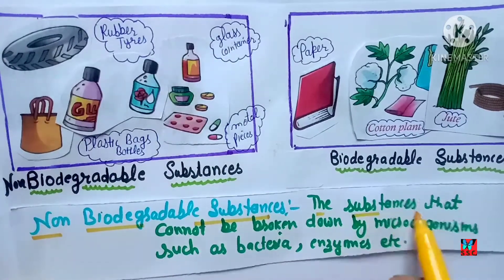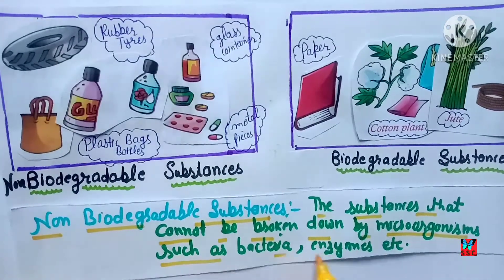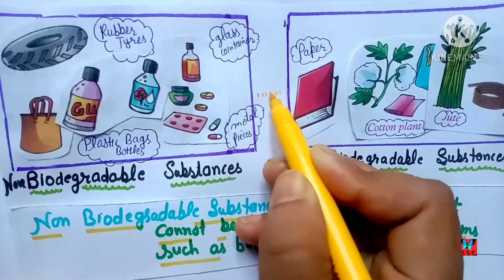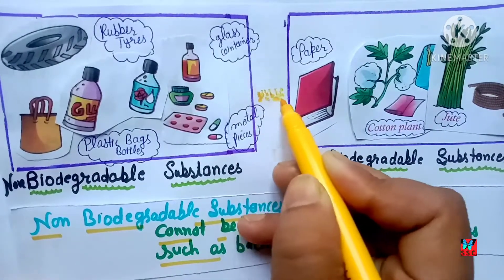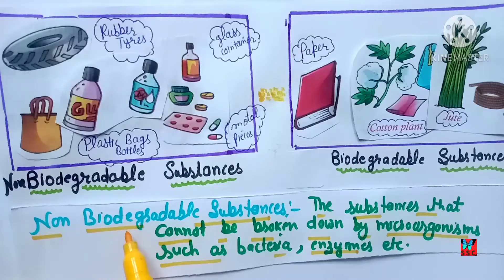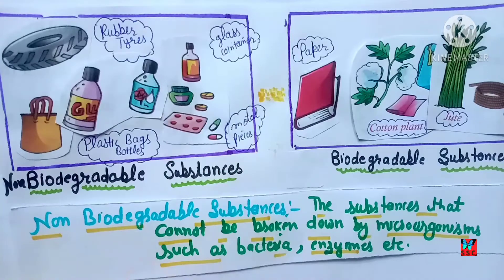Non-biodegradable substances are those that cannot be broken down by microorganisms such as bacteria and enzymes. Microorganisms are very small organisms present in the environment. Substances like rubber, glass, plastic, or metal do not decompose with microorganisms — they take a very long time to decompose.